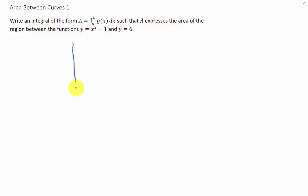Let's make a quick sketch of these two functions. The function x² - 1 is an upward opening parabola shifted down one unit. The function y = 6 is a horizontal line that passes through the y-value 6.